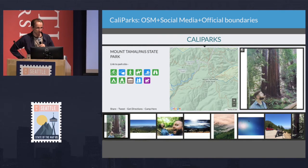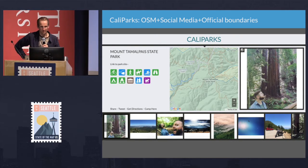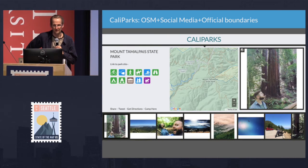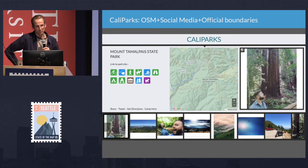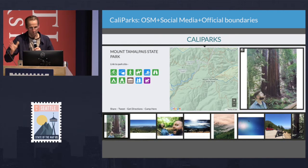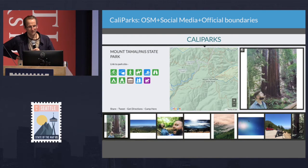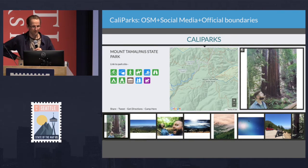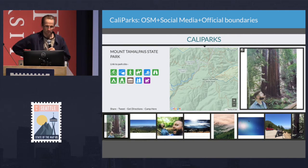During that time I collaborated with folks at Stamen and Green Info Network — the organization of which I'm now executive director — on a statewide parks finder for California called Cali Parks. We used the California Protected Areas Database, harvested photos from Instagram, and also pulled in trails, parks, and amenity data from OpenStreetMap in our base map for that project.